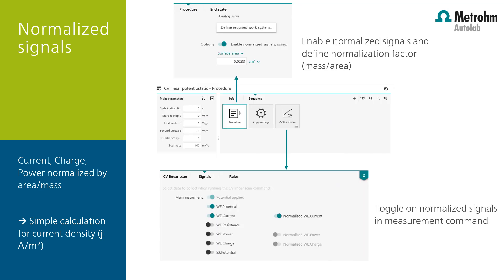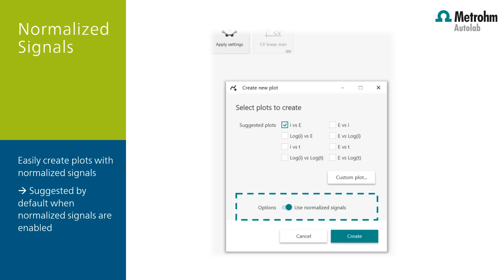The normalized signals are enabled in the procedure tile in the sequence. The signals which could be normalized are the current, the charge, and power. These signals are sampled in the measurement command. The normalized signal can be toggled off or on. When the normalized signals option is enabled in the procedure tile, by default the use of normalized signals is also enabled in the create new plot option, which means you will see the measured current density with respect to the applied potential when you create a new plot. The user can still plot the measured current versus the applied potential, and both plots will be visible in real time.